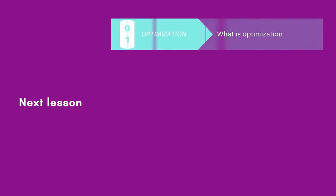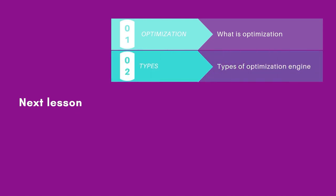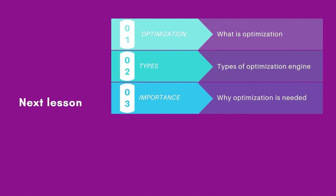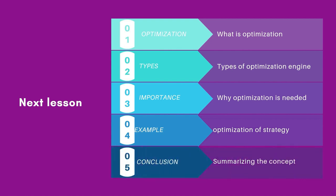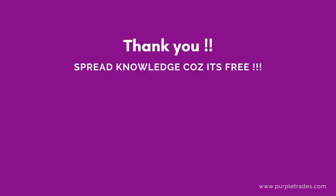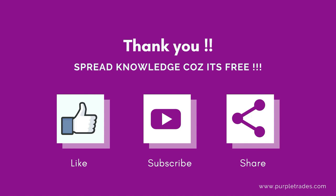That's it for today. In the next lesson, we will talk about optimization — what it is, why we need it, and what types of optimization engines are available inside AMI Broker to help make optimization quicker. We will also take an example, optimize a strategy to make it more profitable, check the backtest report after optimization, and then summarize everything we've learned on AMI Broker from episode 1 all the way through episode 7. Thank you so much for watching — spread knowledge because it's free, and if you like our content, do like, subscribe, and share it with your friends and family.